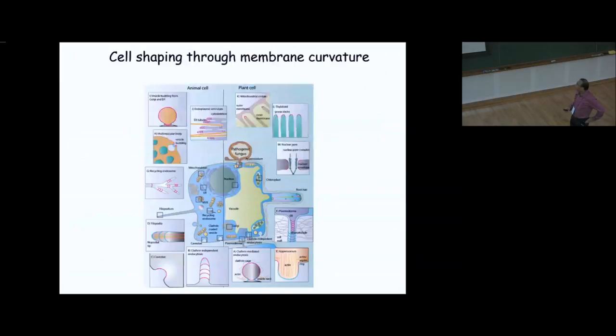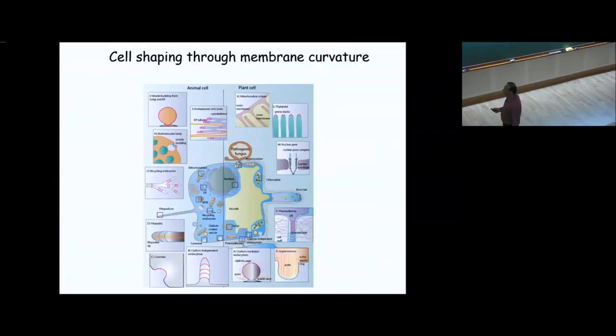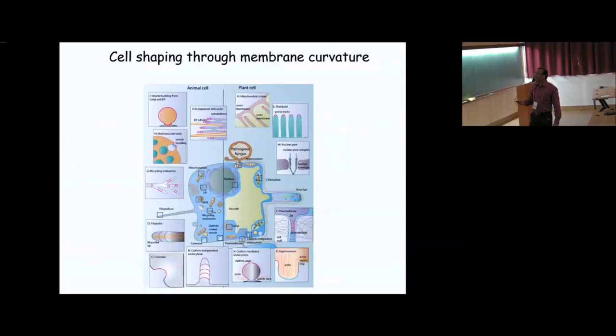In cell structure in eukaryotes there are various organelles and those structures are in different shapes — they are not all flat. This is a typical eukaryotic cell: plant will have the organelles shown on one side and animal cell on the other side. Some organelles are common to both: nucleus, mitochondria, endoplasmic reticulum, Golgi, and in plants, chloroplast — so all are membrane-bound structures.